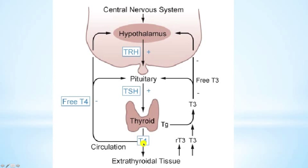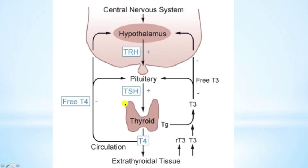If there is too much T3 and T4, they feed back to the pituitary gland to inhibit TSH release and to the hypothalamus to inhibit TRH release. This is known as negative feedback — we don't want more thyroxine production when there is already too much in the blood. On the other hand, if there is too little of these hormones, that would lift inhibition from the hypothalamus and pituitary, leading to increased TRH and TSH production to stimulate the thyroid to produce more thyroxine, altering the basic metabolic rate in a positive way.